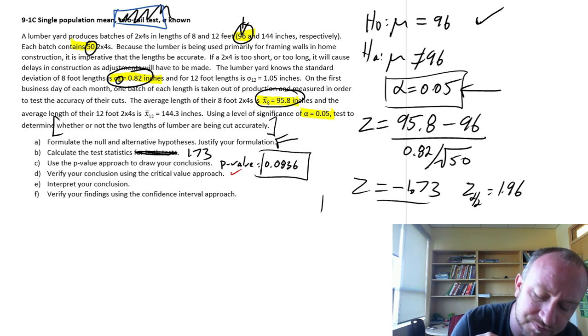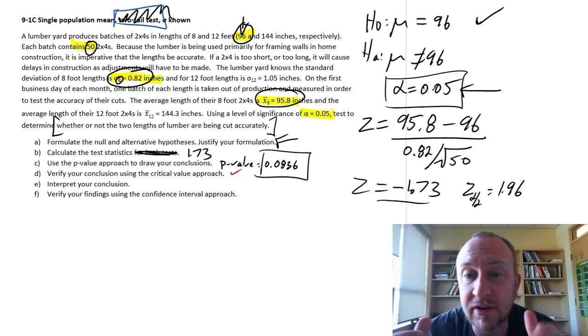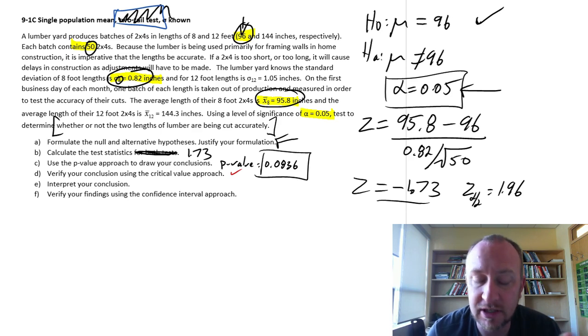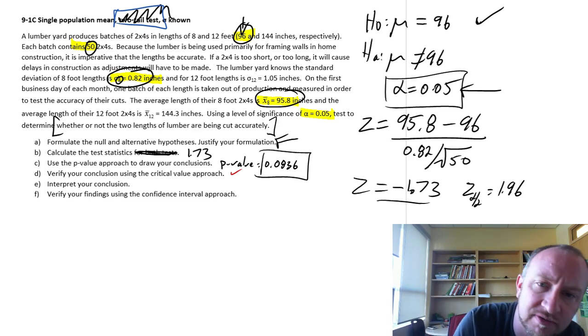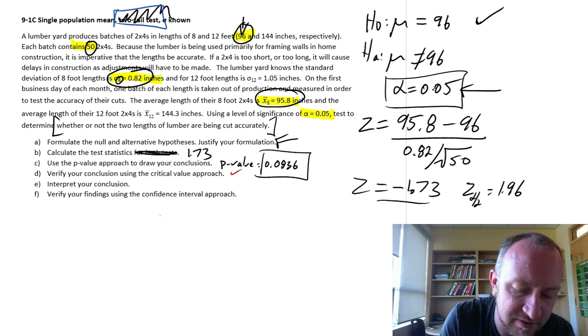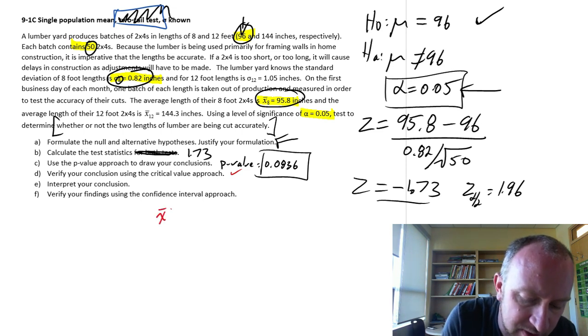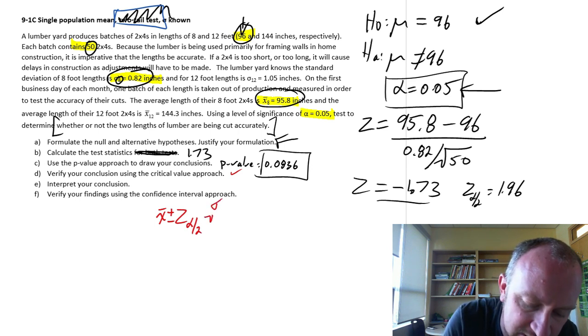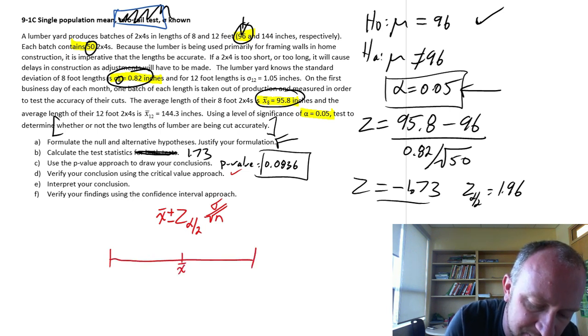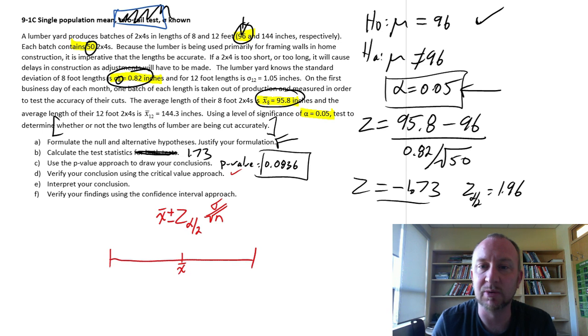What we're going to do now is develop a confidence interval estimate for the true unknown population mean. So you may recall from chapter 8, I believe, or module 8, we had this formula for developing confidence intervals. Like this one. And so that allowed us to develop this interval around that point estimate.